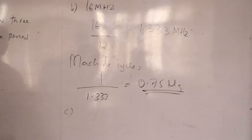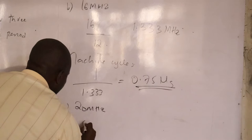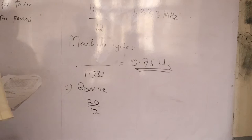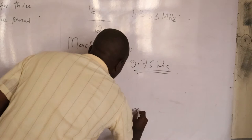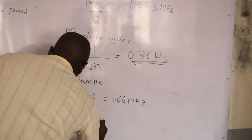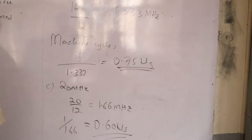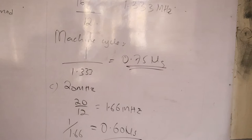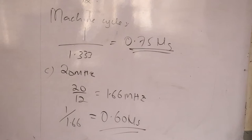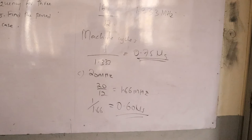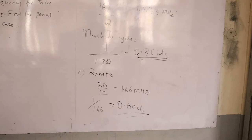That concludes example 1 — that is how we calculate the machine cycle. The machine cycle depends on the crystal frequency and the 12-oscillator-period rule, with results in microseconds when units are handled correctly.